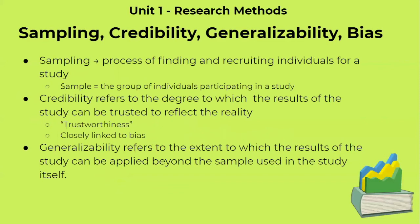The four main concepts that encompass all research methodology are: sampling — the process of finding participants for your study; credibility — linked to trustworthiness and bias, meaning how much we can trust your results; generalizability — closely linked to sampling, meaning how well your sample represents the population you're studying; and bias. Generalizability reflects how applicable your results are to the broader population you're trying to study.